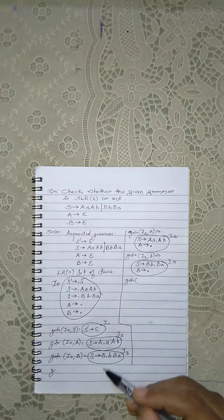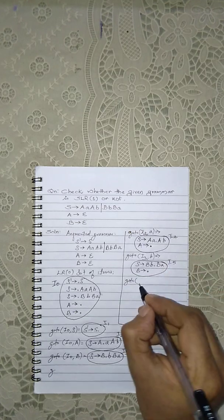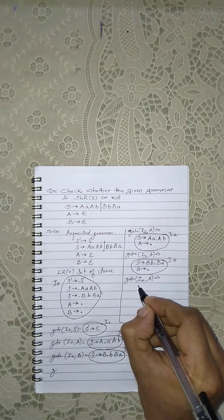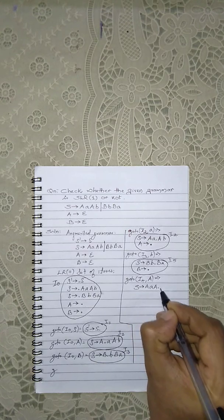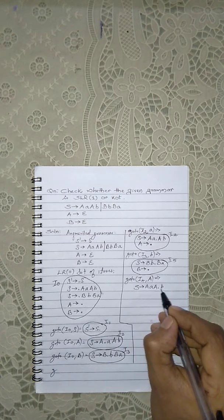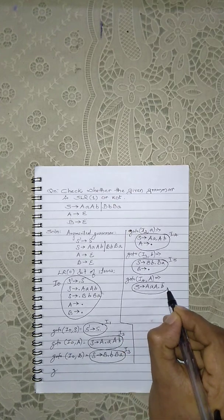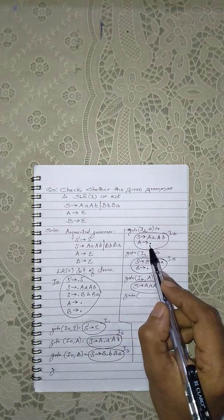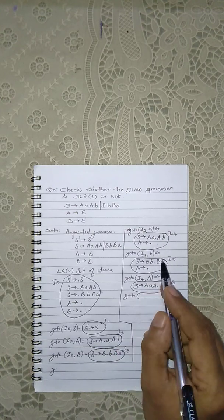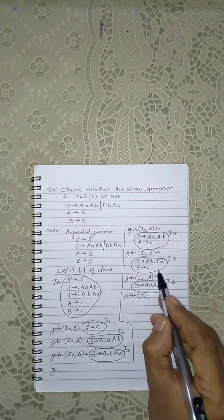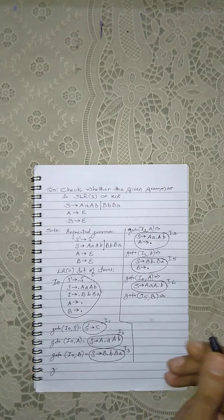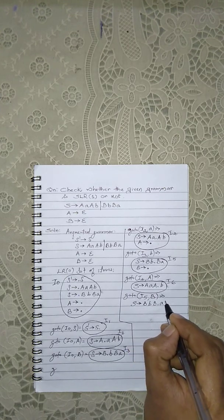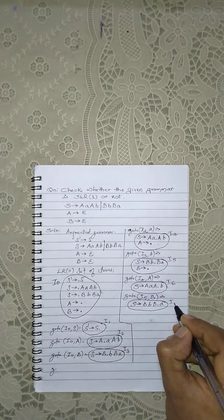Now with I4, going to I4 with capital A, we get S producing AAA dot B. Since after the dot we have a terminal, nothing else is added. This is I6. With I5, going to I5 with capital B, we get S producing BBB dot A. This is I7.